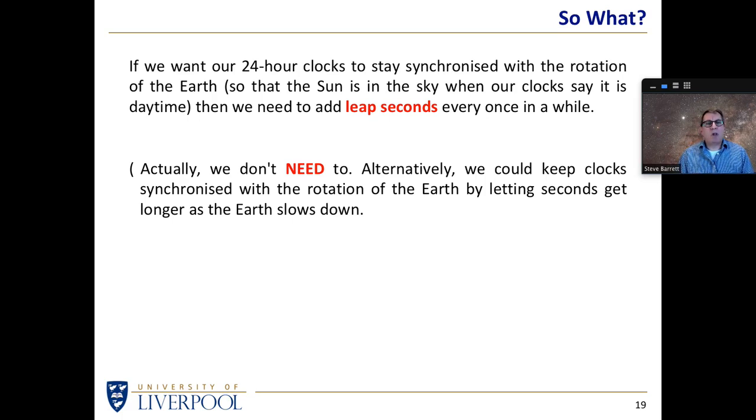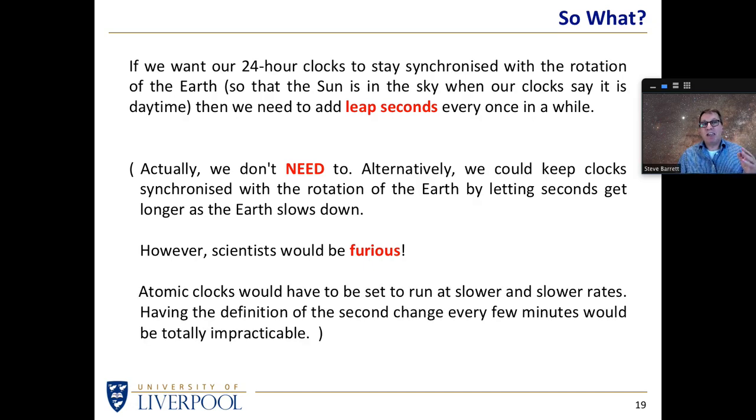If the earth is slowing down, all we need to do is slow down our clocks and then our clocks will always say that the earth takes 86,400 seconds. In other words, a day will always be 24 hours if we simply slow down our clocks as the earth is slowing down. However, perhaps you can see the problem with that. The scientists would be furious because it would mean you have to keep redefining what a second actually is.